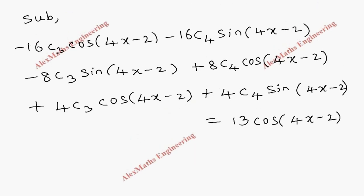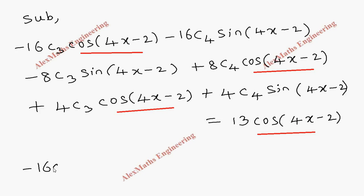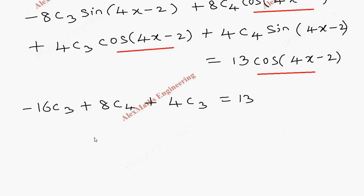Now let's compare the cos(4x − 2) terms on both sides. That gives −16c3 + 8c4 + 4c3 = 13. Adding like terms: −12c3 + 8c4 = 13. Let's take this as the first equation.